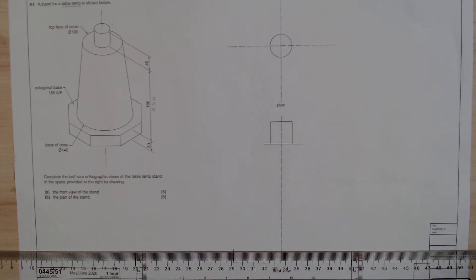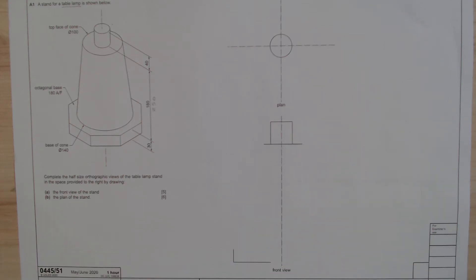Good afternoon Year 11s. I'm going to discuss Paper 5 with you today — this is the May/June exam paper of 2020. I'm going to start with Section A, which has two compulsory questions. In my next video I will do A2, then the following video will cover B4 and B5, so I will answer all the questions for you.